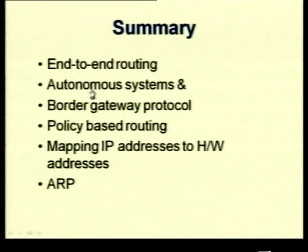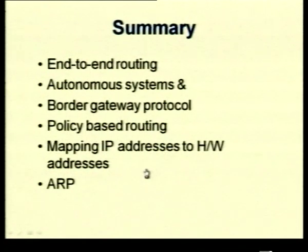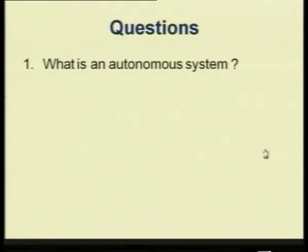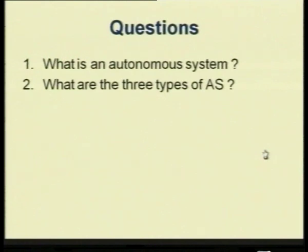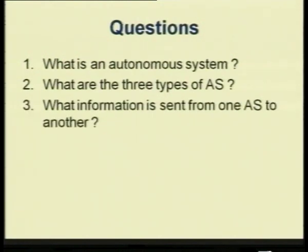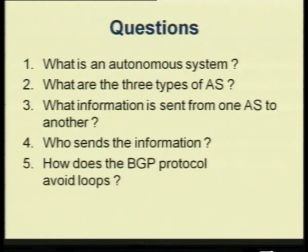To summarize today's lecture: we looked at end-to-end routing issues, specifically how to go from one autonomous system to another using border gateway protocols and how BGP uses policy-based routing. We also examined how to map IP addresses to hardware addresses using the ARP protocol, enabling delivery to the final destination node. Review questions: What is an autonomous system? What are the three types? What information is sent between autonomous systems? Who sends it? How does BGP avoid loops? Why is ARP needed?